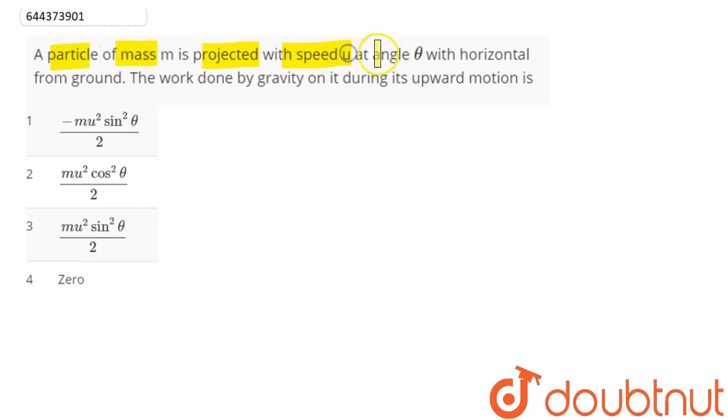So here when a particle is released with velocity u at an angle theta, hence we can say here the highest height of the projectile in this projectile motion which is given as h max is equal to u square sine square theta divided by 2g.